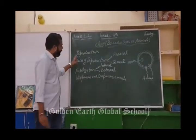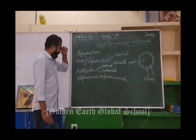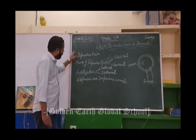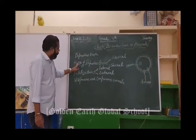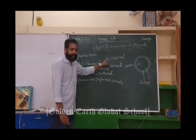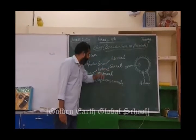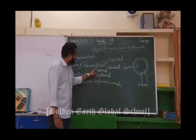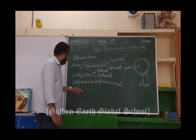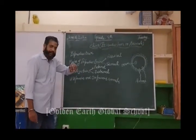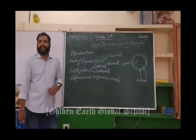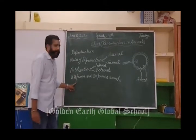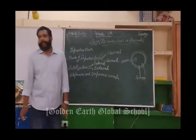So these are the main topics in the first lecture: reproduction, modes of reproduction — that is asexual and sexual reproduction — fertilization, that is internal and external fertilization. And based on the type of fertilization, we categorize animals into two parts: viviparous and oviparous animals.